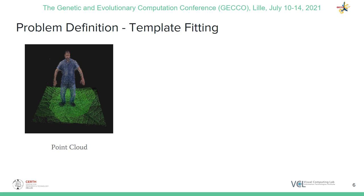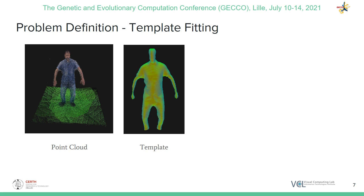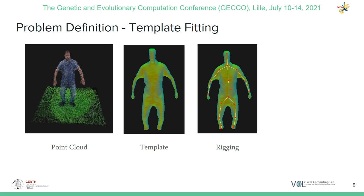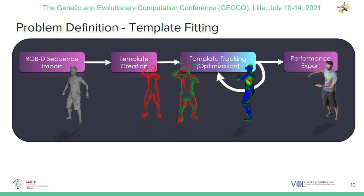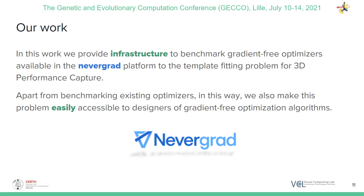The performer is initially captured in a neutral pose. Subsequently, a 3D Mesh, called Template Mesh, is constructed from the acquired point cloud. A human skeleton is embedded inside the template mesh with a process called skeleton rigging. And finally, all mesh vertices are associated with skeleton bones in a process called skinning. For 3D Performance Capture via Template Fitting, the goal is to solve for the mesh template's pose parameters that transform the template mesh close to the pose of the performer at each frame.